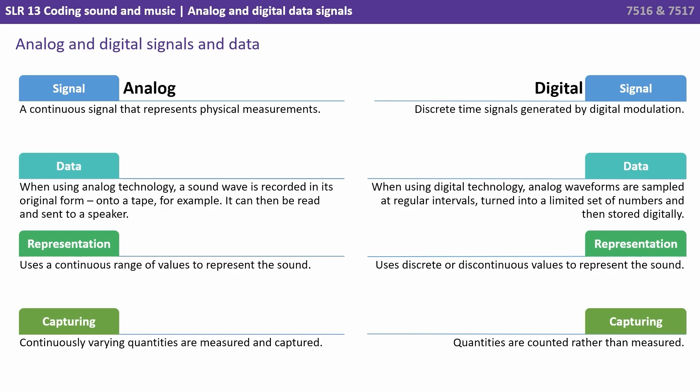For digital technology, analogue waveforms have to be sampled at regular set intervals, turned into a limited set of numbers, and then stored digitally. Analogue sound uses a continuous range of values to represent the sound, whereas digital uses discrete or discontinuous values. When capturing sound, with analogue we have continuously varying quantities which are measured and captured, while with digital, quantities are counted rather than measured.